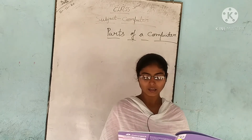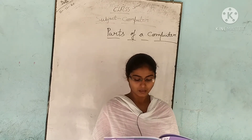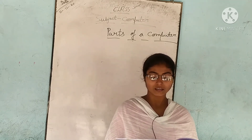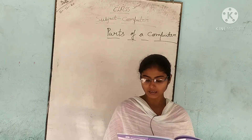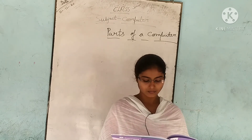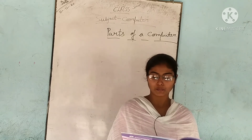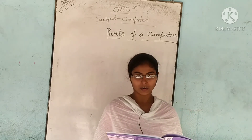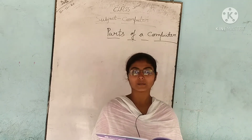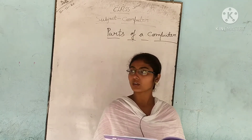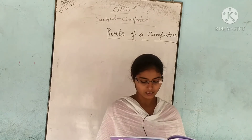Numerical keys are used to type numbers 0 to 9. There are 26 alphabet keys which are not arranged in alphabetical order. These keys are used to type words, sentences, or paragraphs.